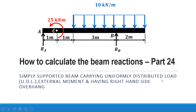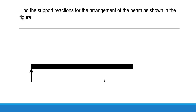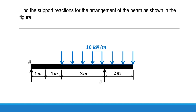In this video we'll try to understand how to calculate the beam reaction in case of a simply supported beam carrying a uniformly distributed load of 10 kN per meter over a length of 5 meters, an external moment of 25 kN·m, and an overhang on the right hand side. We need to find out the reactions RA and RB.